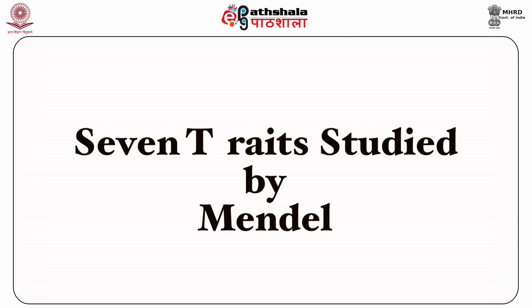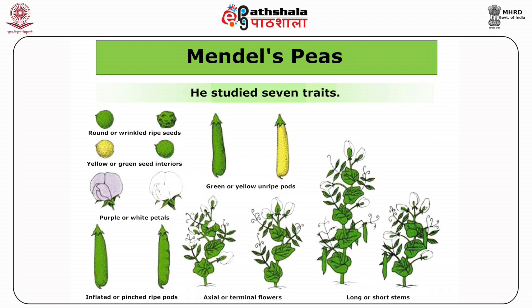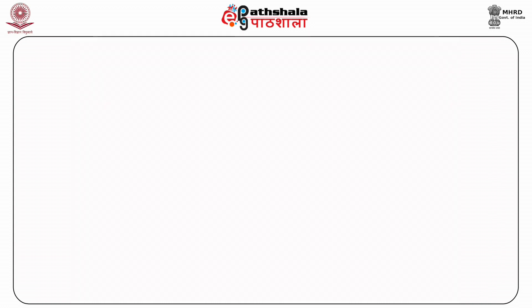Seven traits were studied by Mendel in the pea plant: first, seed coat color or flower — gray and purple; second, seed color — yellow and green; third, seed shape — smooth and wrinkled; fourth, pod color — green and yellow; fifth, pod shape — inflated and pinched; sixth, stem height — tall and short; and seventh, flower position — axial and terminal.